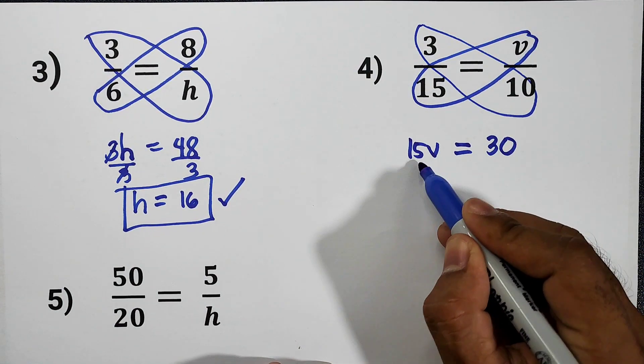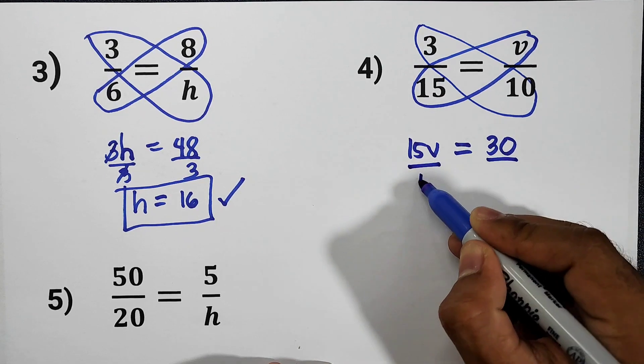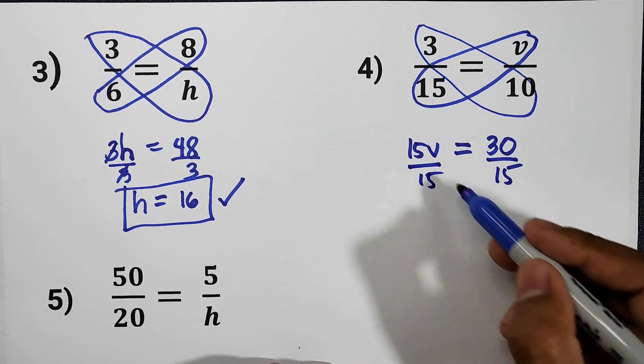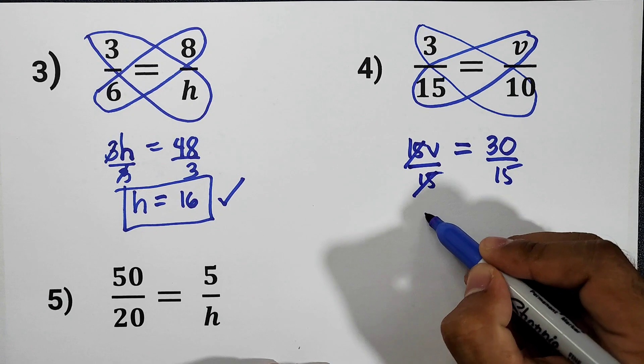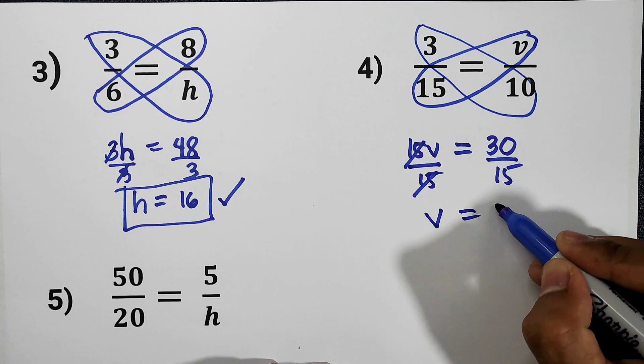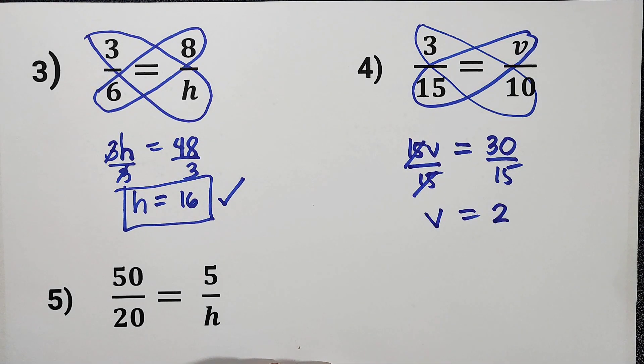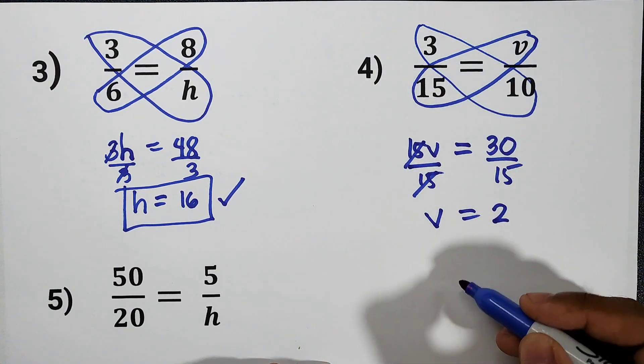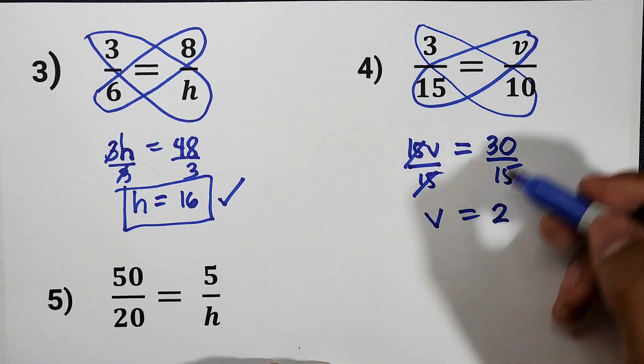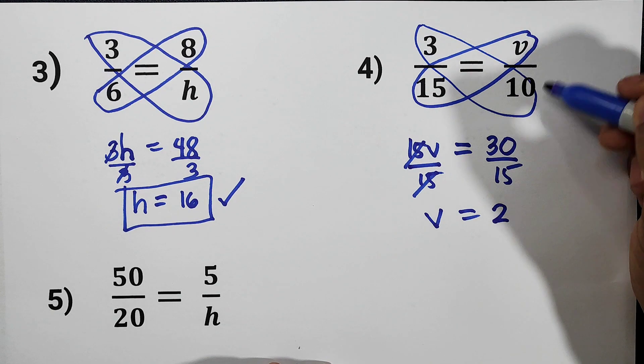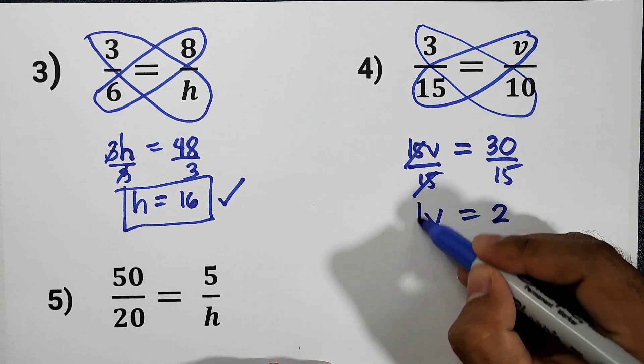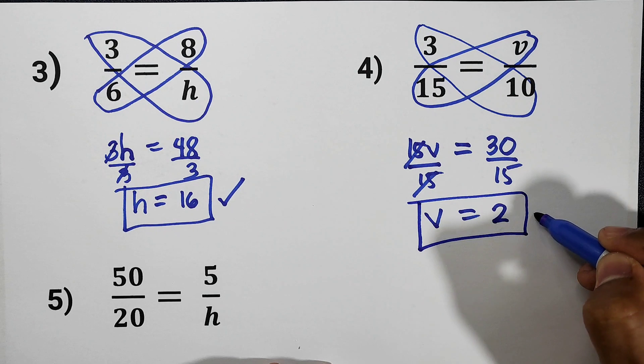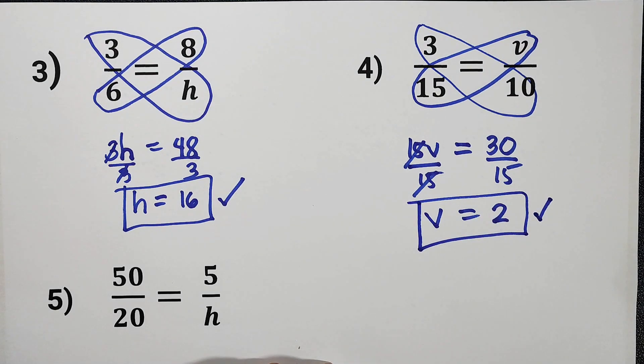To find the value of V, divide both sides by 15. Cancel. V is equal to 2. Let us check. 3 over 15, that is equal to 1 fifth. Then 2 over 10 is also 1 fifth. That's why V is equal to 2 is our final answer.